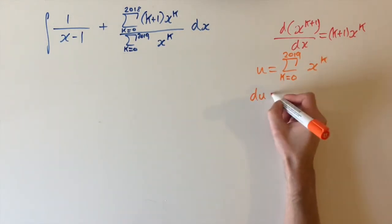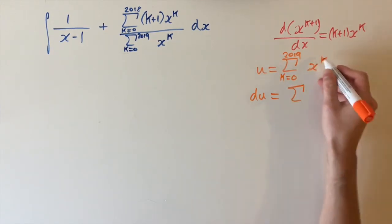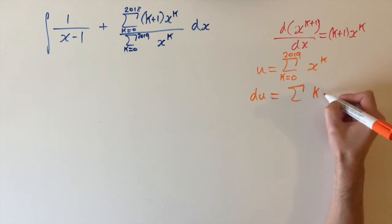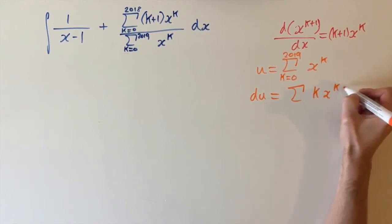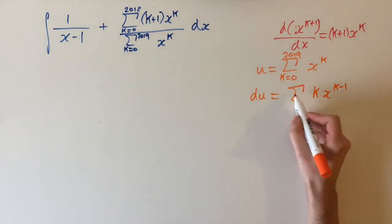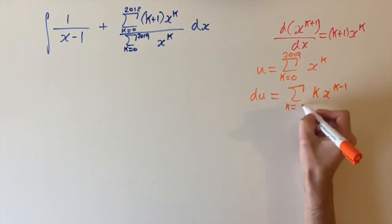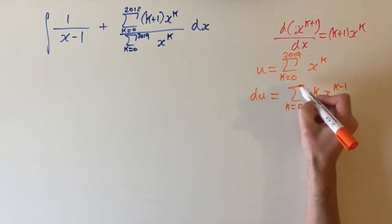So we have du equals, we have the sum, and let's think about differentiating the terms in here first. We have k times x to the k minus 1. That's just differentiating these terms. And because differentiation is linear, the series interchanges with the differentiation. So it's actually the same, the start limits are the same here. So it's from k equals 0 up to 2019.